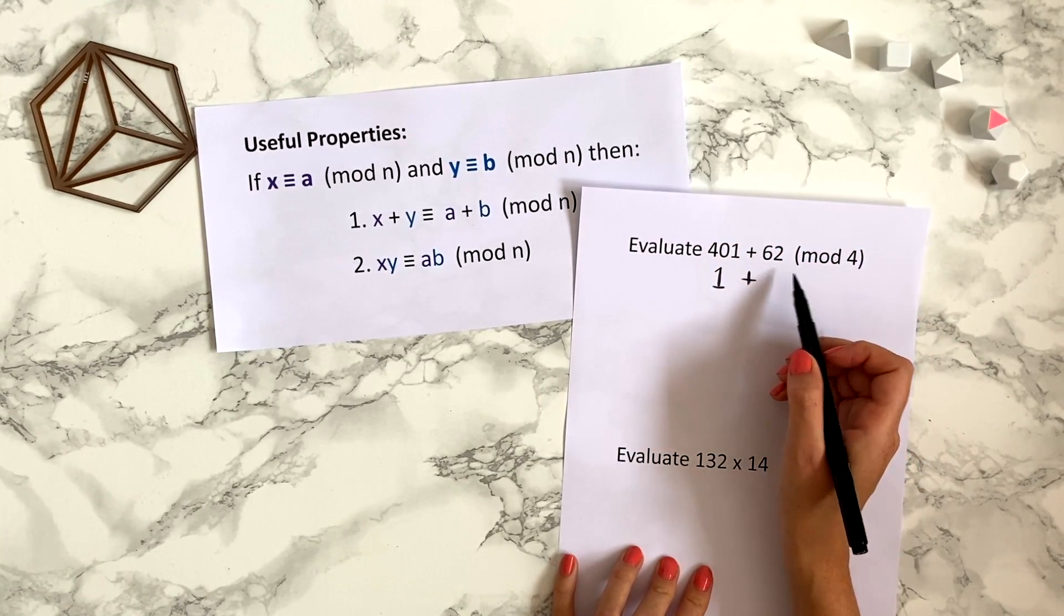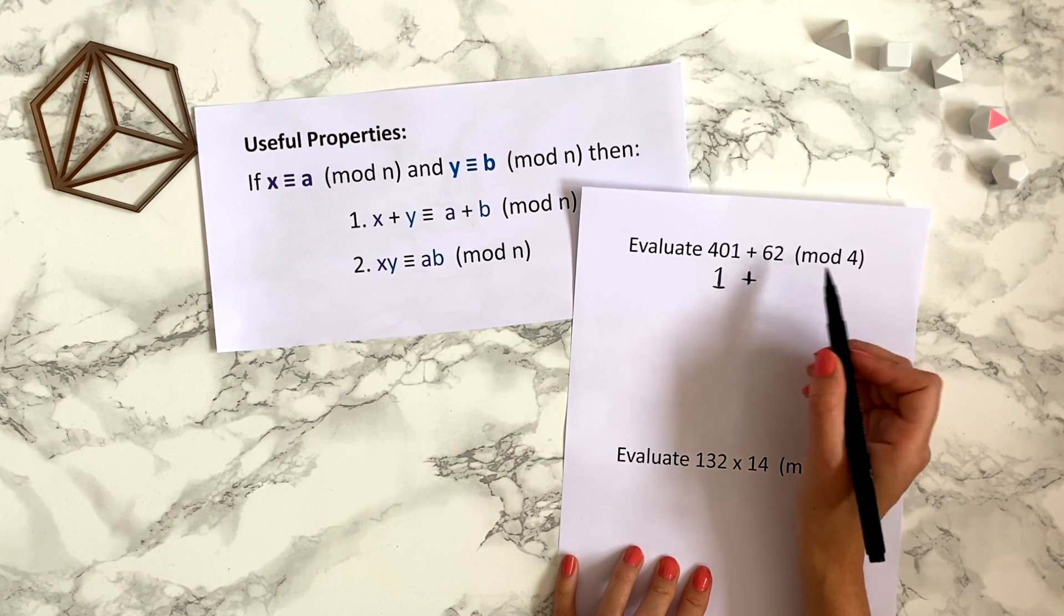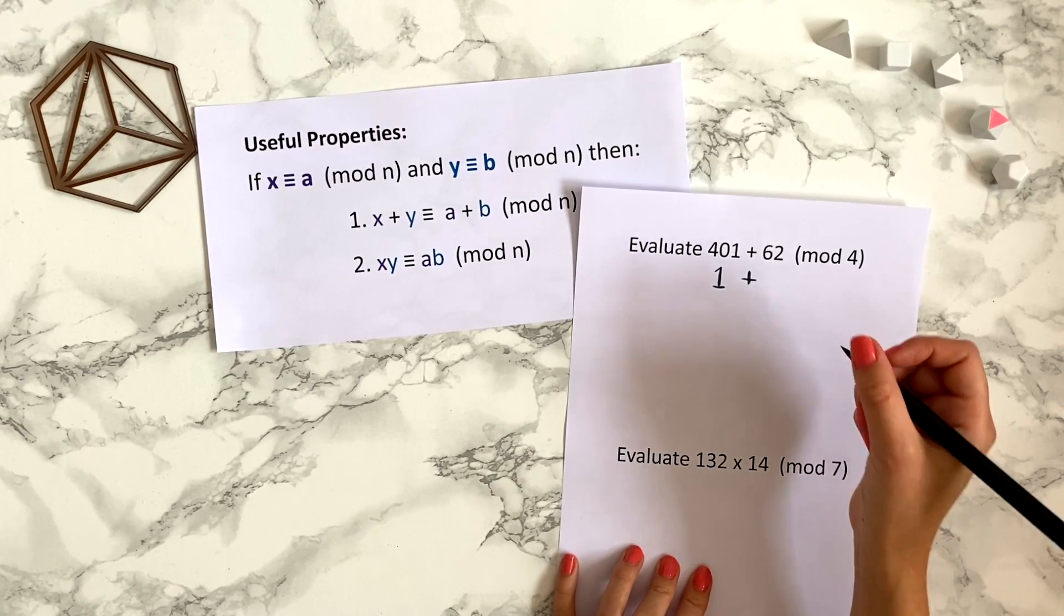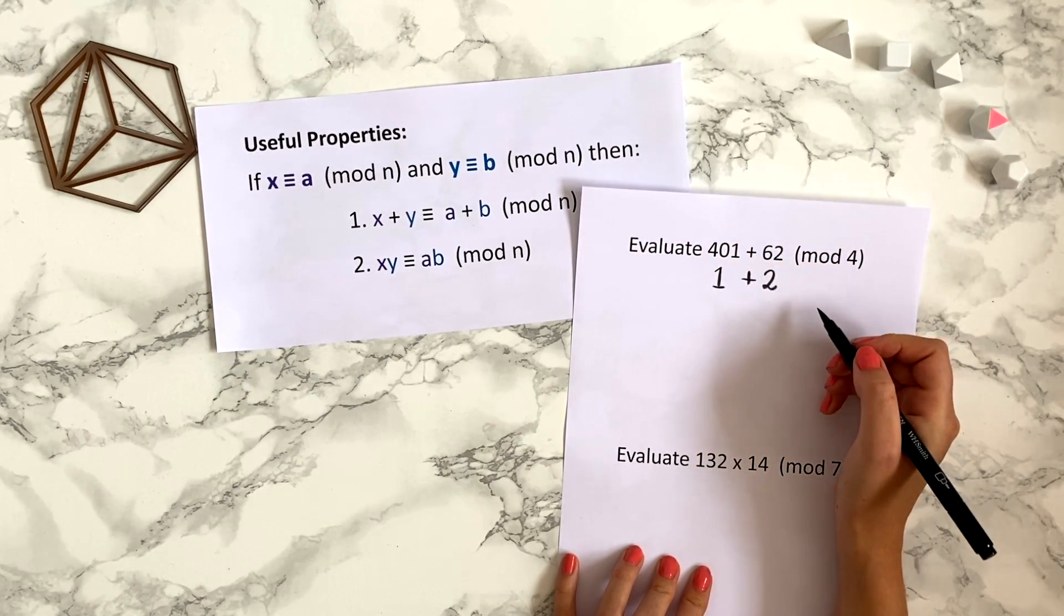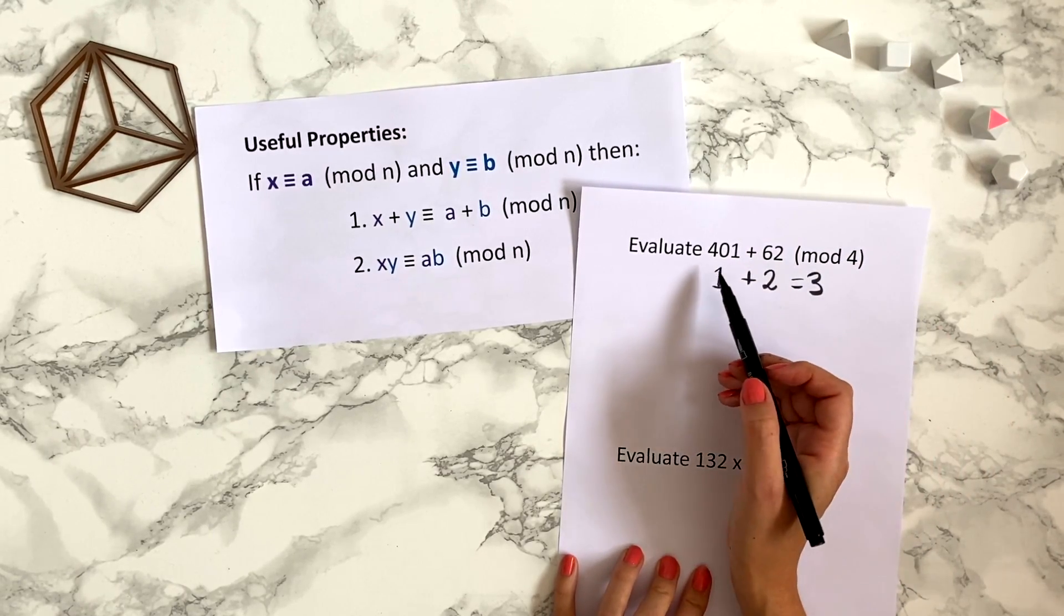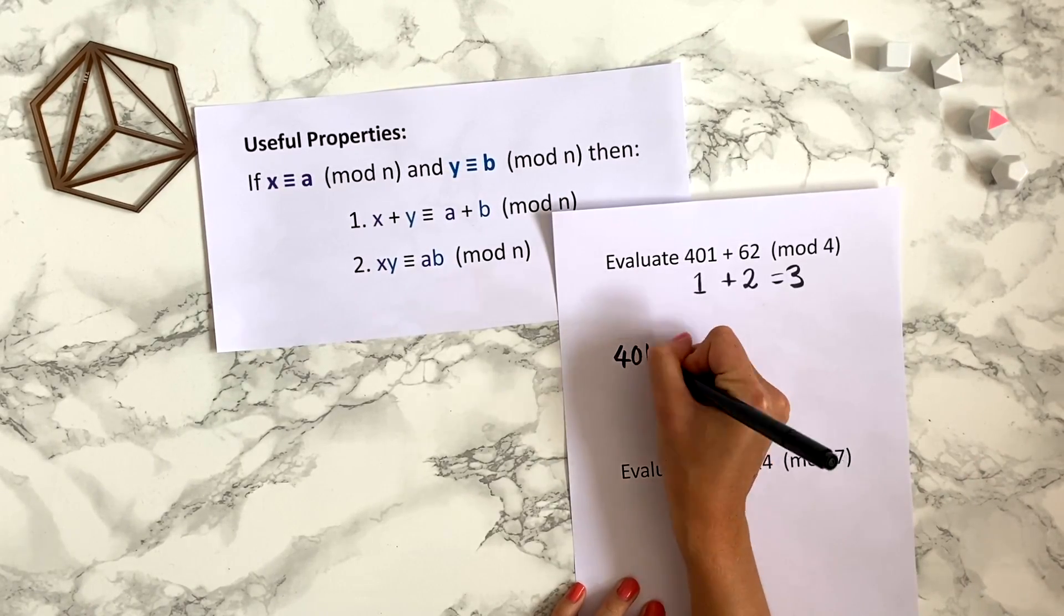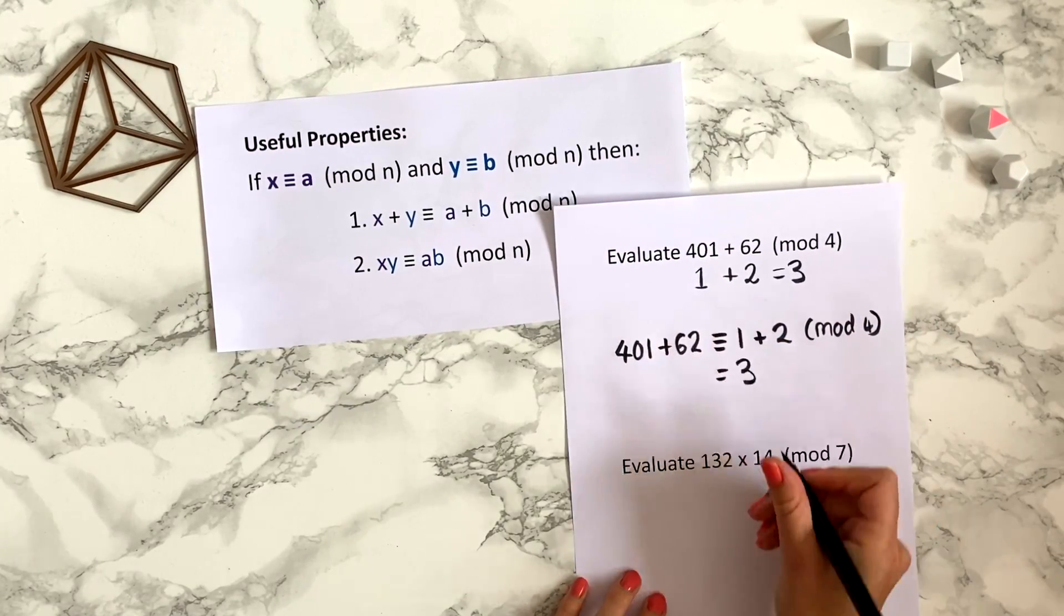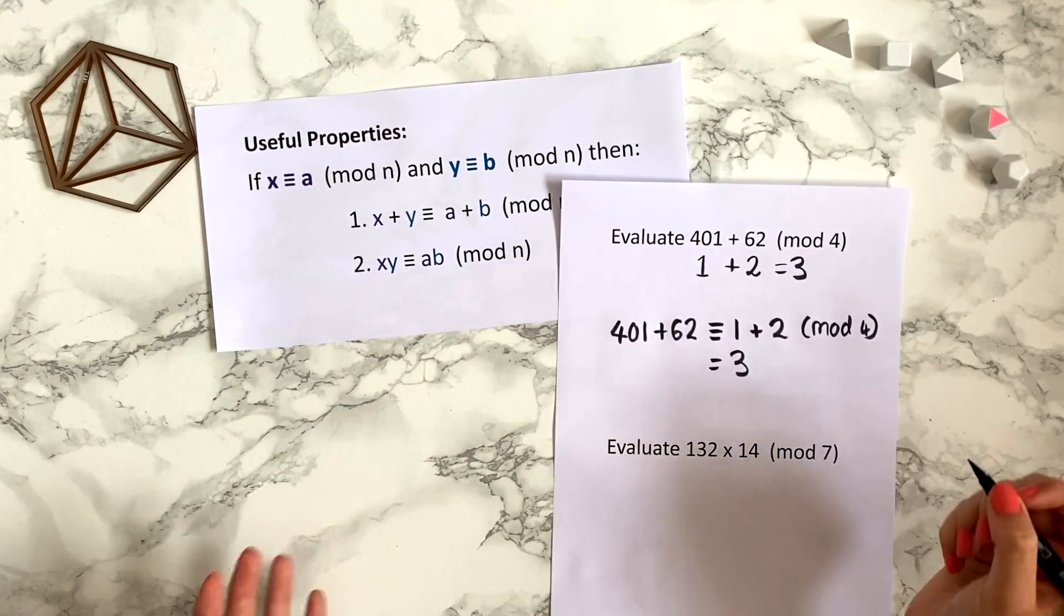62 modulo 4, well 60 is divisible by 4, so 62 would leave remainder 2 when divided by 4. So 62 is congruent to 2 modulo 4. 1 + 2 is 3, so this tells us that 401 + 62 is congruent to 3 modulo 4. We can write this out properly like this. Using this theorem can save a lot of time when working out big calculations.